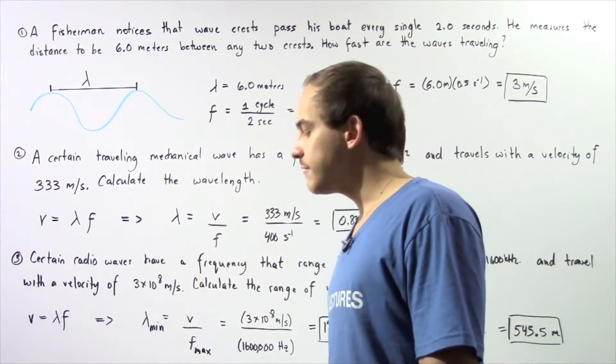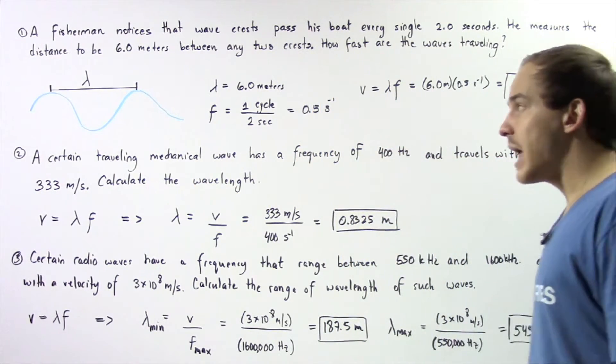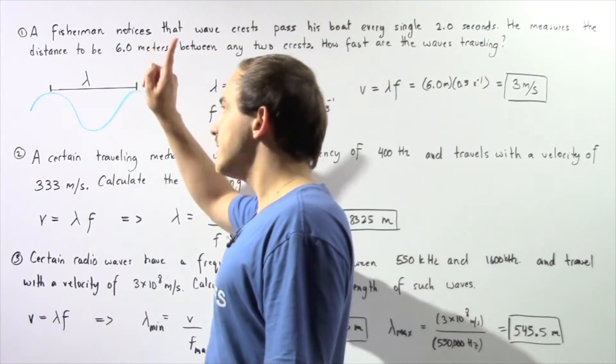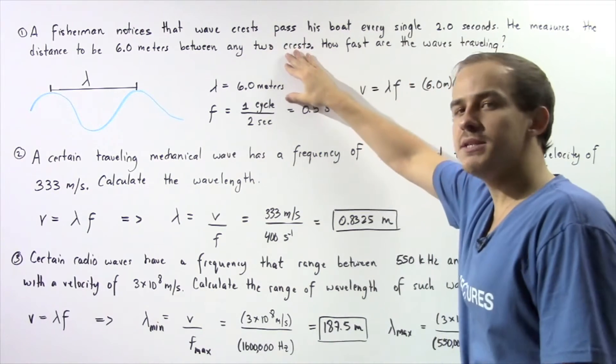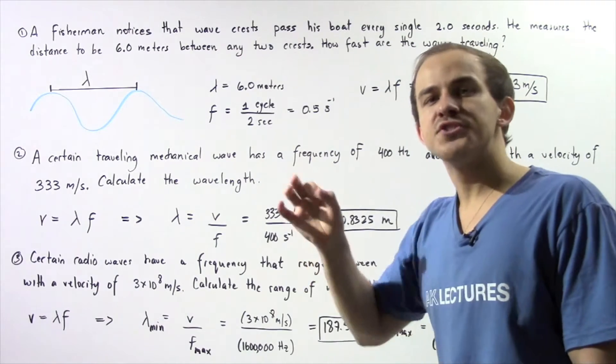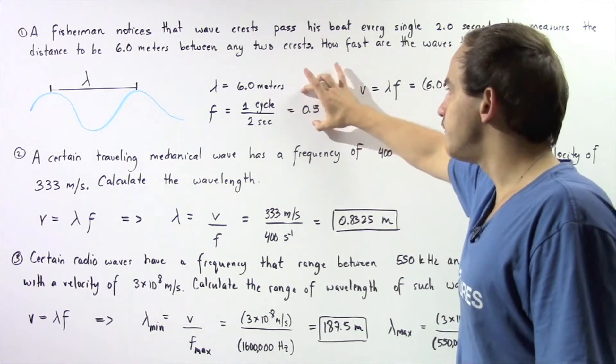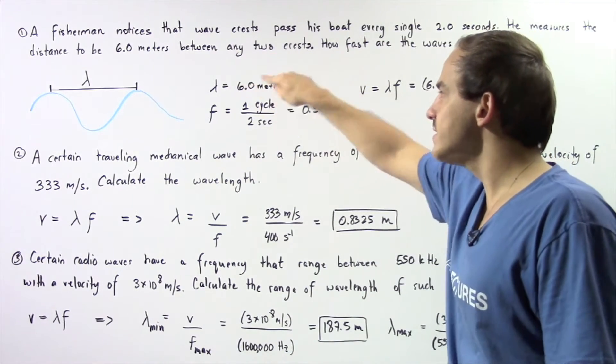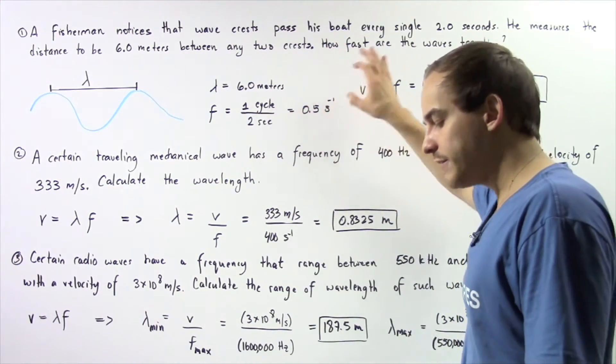Let's suppose we have the following propagating wave. Now we are told that our wavelength, the distance between any two consecutive crests, is given to be six meters. And we also know that the frequency, the number of cycles made every single second, is given by the following value. So one cycle every single two seconds is equal to 0.5 hertz.